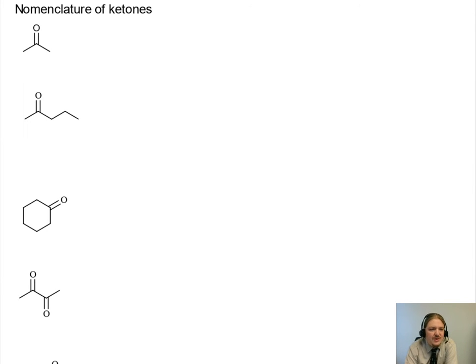I'm going to start with the simplest possible ketone, and the simplest possible ketone has three carbons in it. Many of the other functional groups, the simplest example only has one carbon, but because the ketone needs to be a carbonyl group sandwiched between two alkyl groups or two hydrocarbon groups, this is the simplest ketone.